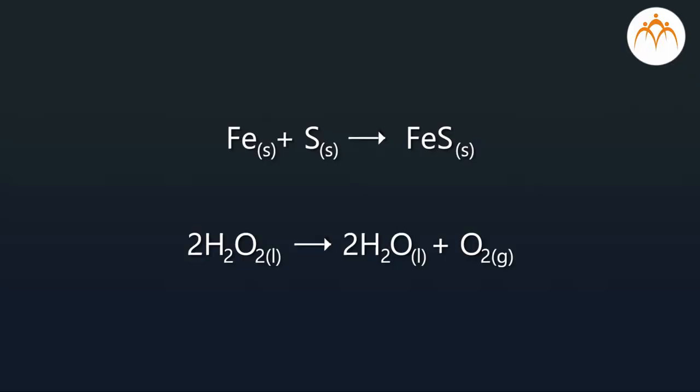Physical states - solid, liquid, and gas - of reactants and products are indicated by the letters S, L, and G in brackets, written as subscripts at the bottom of the reactants and products.